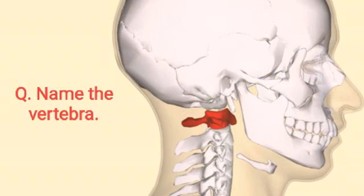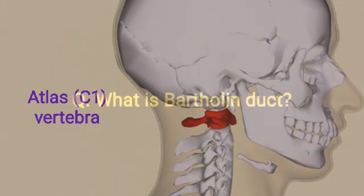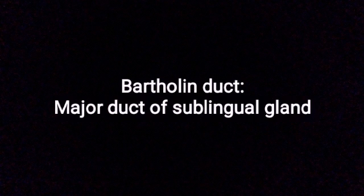Name the vertebra. Atlas vertebra. What is Bartholin's duct? Bartholin's duct is the major duct of the sublingual gland.